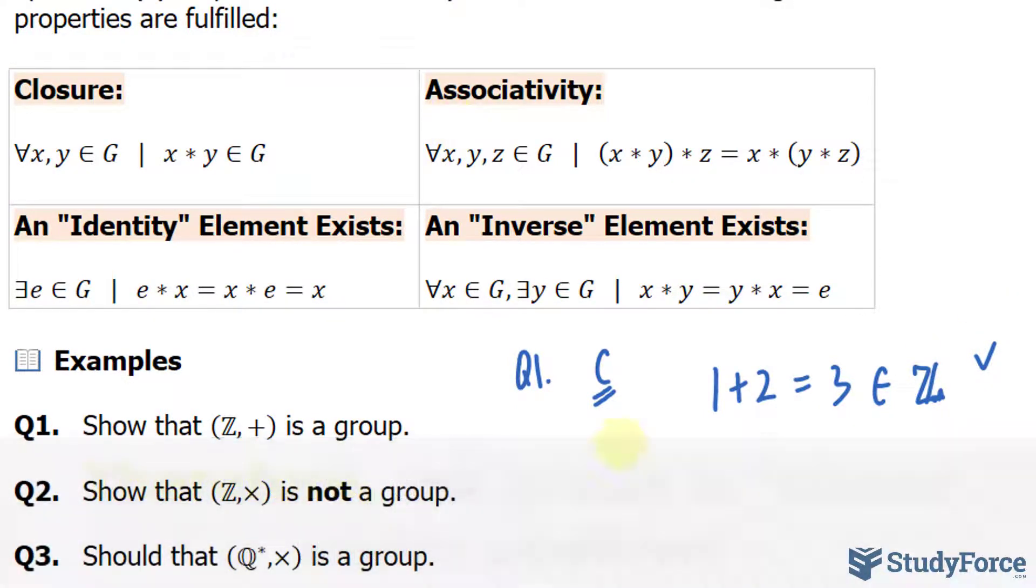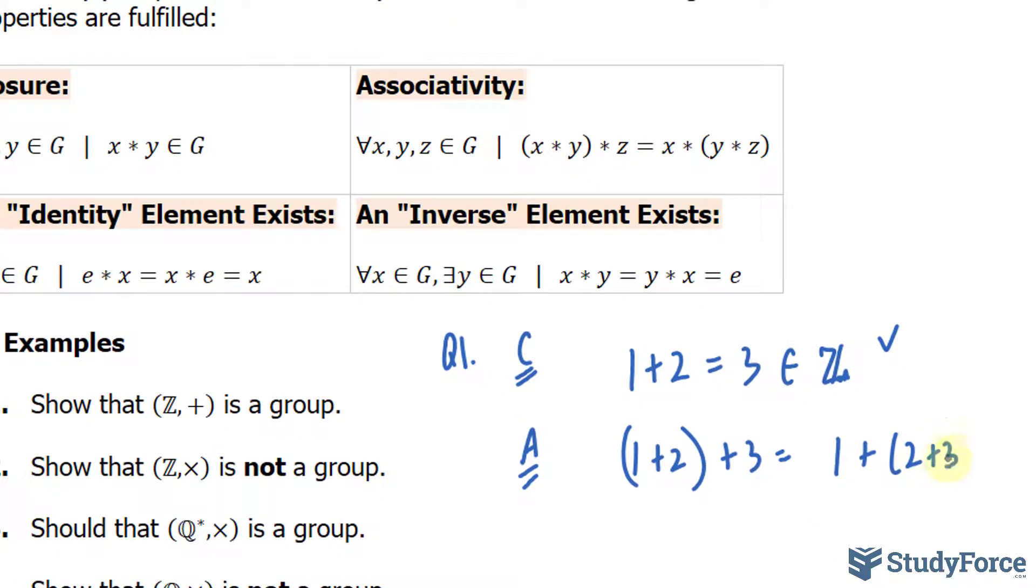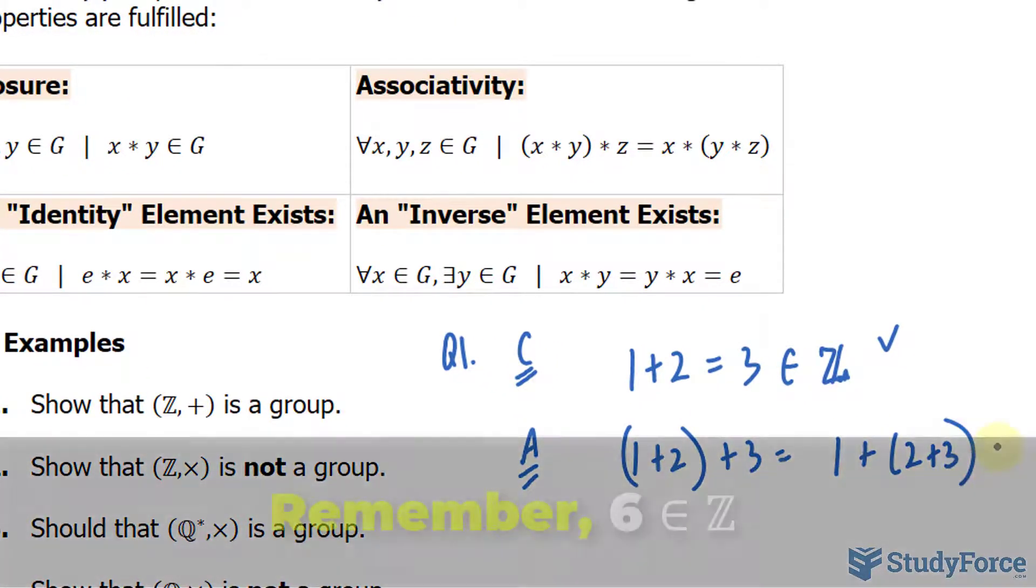Next is associativity. Let's pick three elements: 1, 2, and 3. If I write (1 + 2) + 3, which amounts to 6, it's the same thing as 1 + (2 + 3), which also amounts to 6.